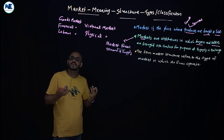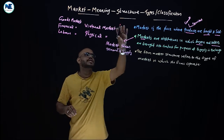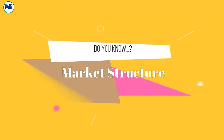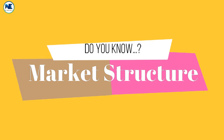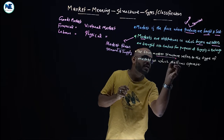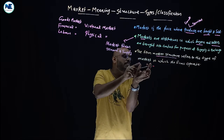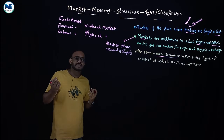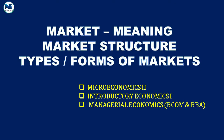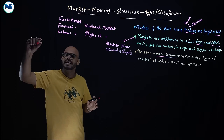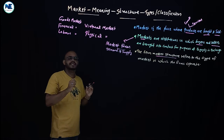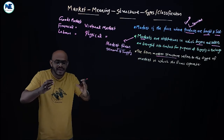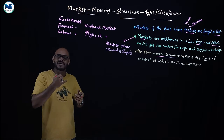Demand is coming from buyers or consumers, and supply is coming from sellers, firms, or producers. Now we need to discuss what we mean by the structure of the market — market structure. The term market structure refers to the type of market in which firms operate. Whether the firms are operating in a monopoly market, perfect competition, monopolistic competition, or oligopoly — that is what market structure refers to.